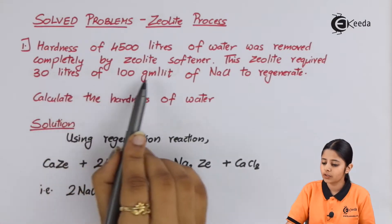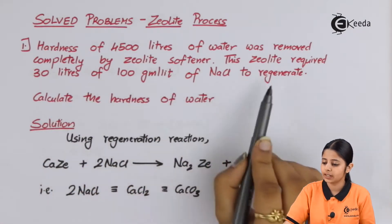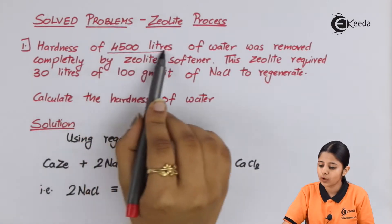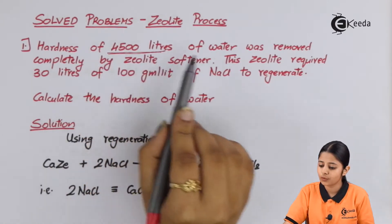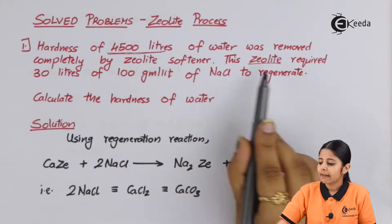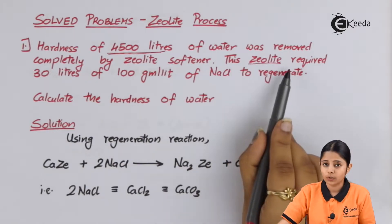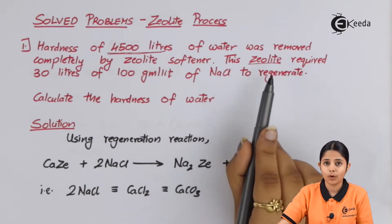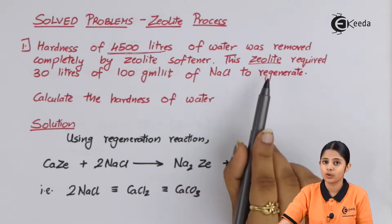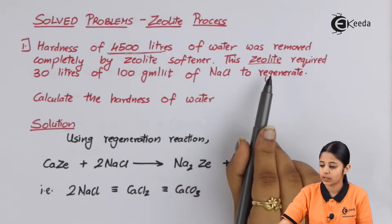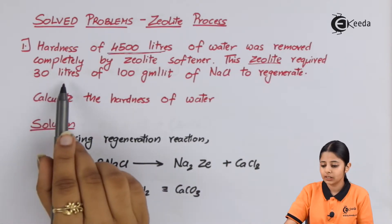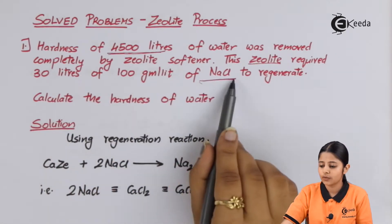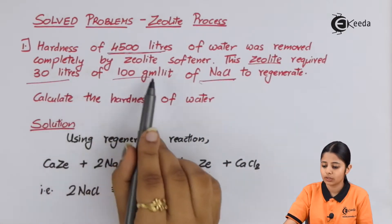What is given to us is 4,500 litres of water — that is the quantity of water. The word zeolite is given to us, which means we will have to use the zeolite formulas and reactions. It requires 30 litres of 100 grams per litre of NaCl, so the values of NaCl are also given to us.